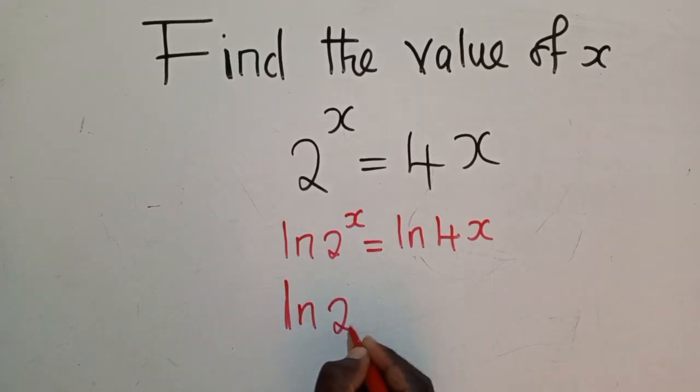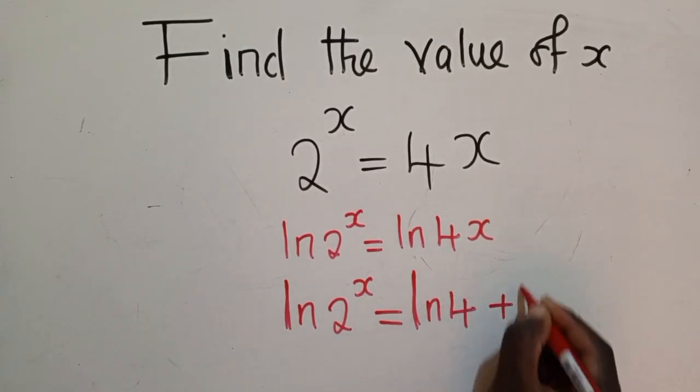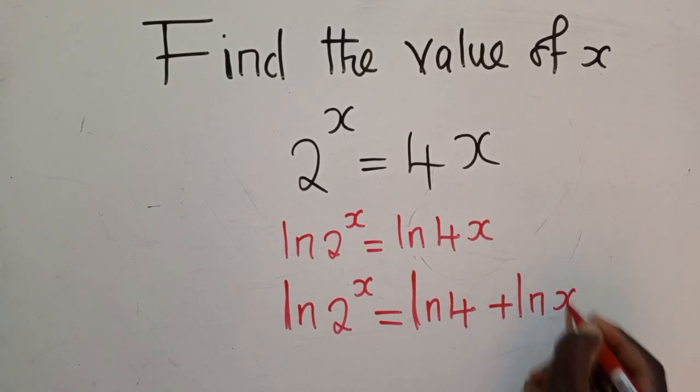And the other side, we say ln of 4 plus ln of x, like that. Okay, so I guess you know this property right here.